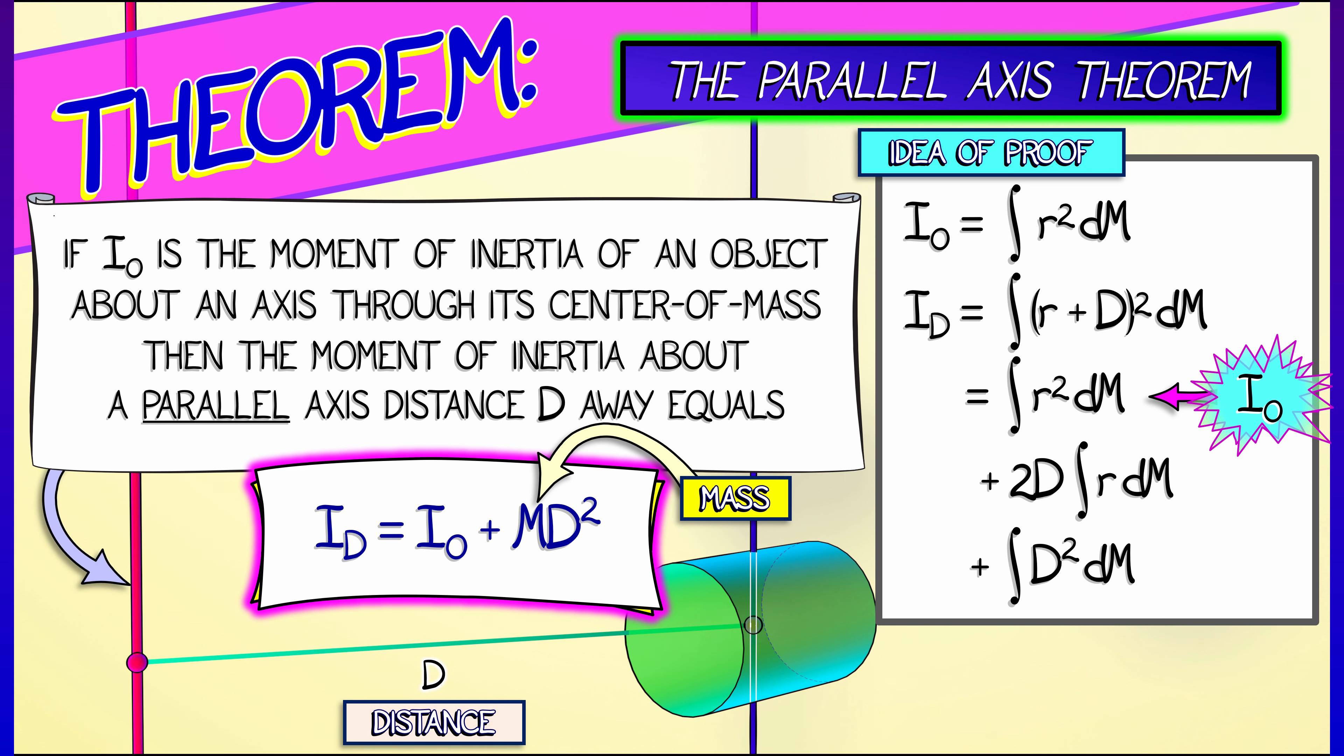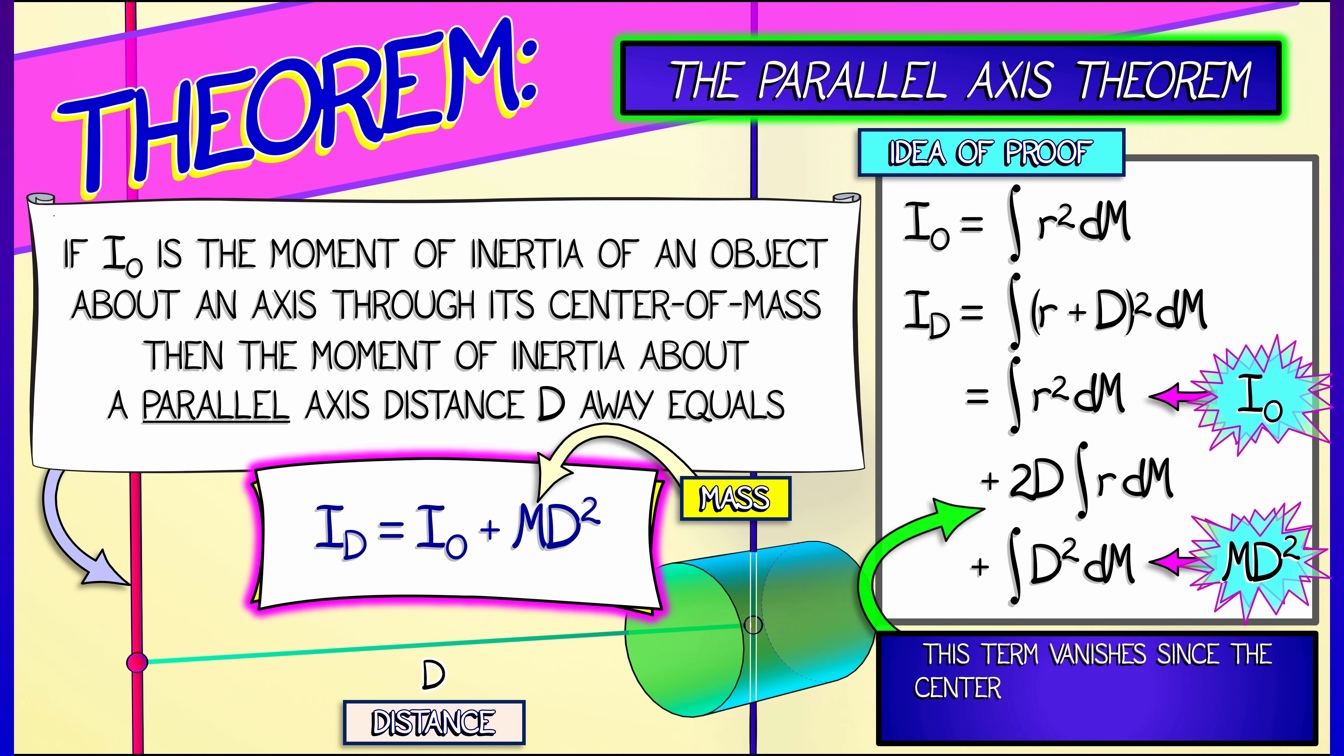And if I look at that last term, d is a constant, so the integral of d squared dm is just md squared. But what about that middle guy? Let's think about that. That middle integral actually vanishes, since by definition of the center of mass, the integral of r with respect to dm is zero. You're going through something that has average radial distance zero with respect to mass. Okay, that's the idea of the proof.